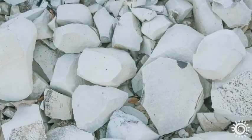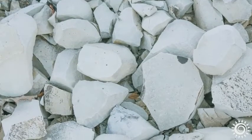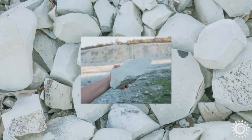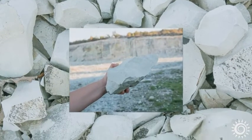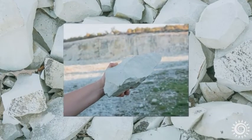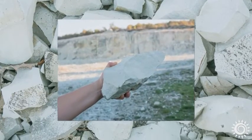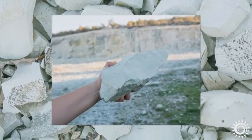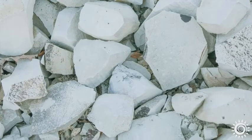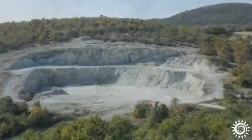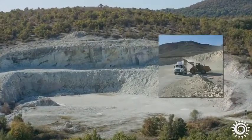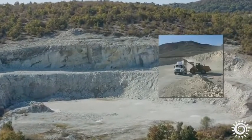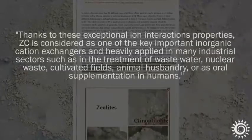Natural zeolite rocks are present in the Earth's crust and sediment layer, formed from the geological compression of volcanic ash and marine water over a period of thousands to millions of years. These surface deposits are found all over the planet and are easily mined and used for industrial and commercial applications.